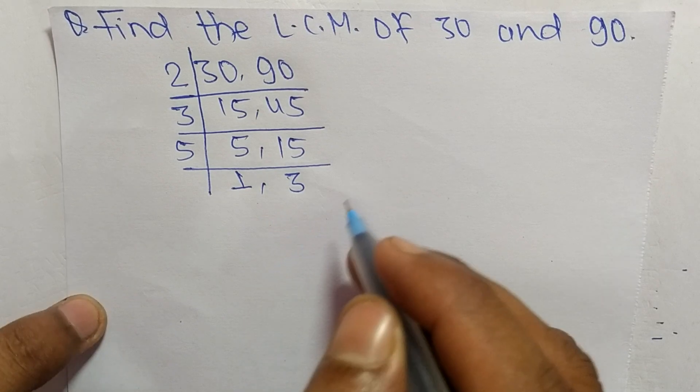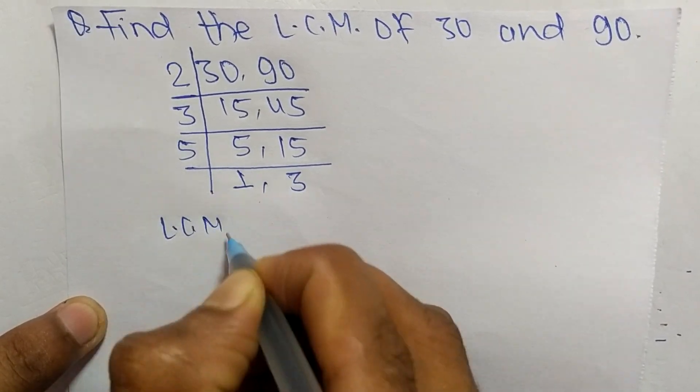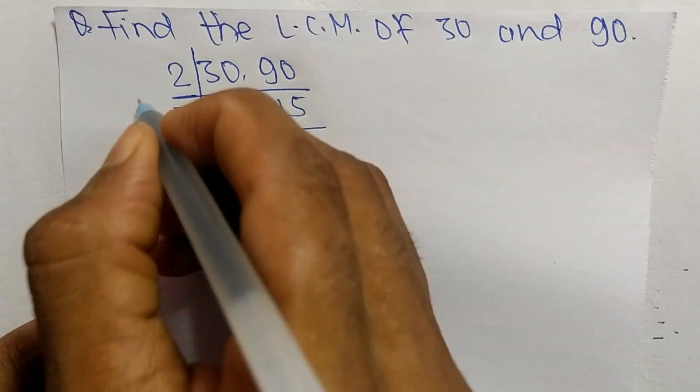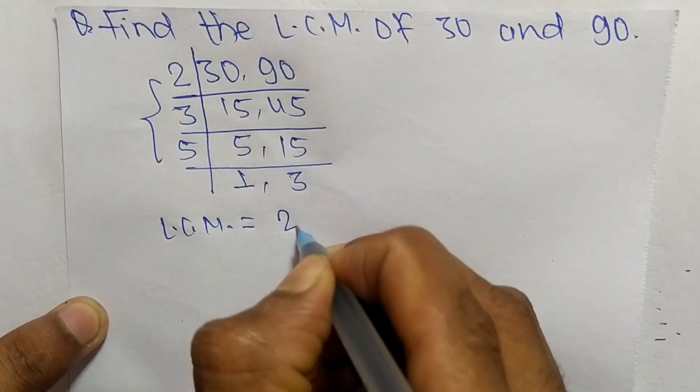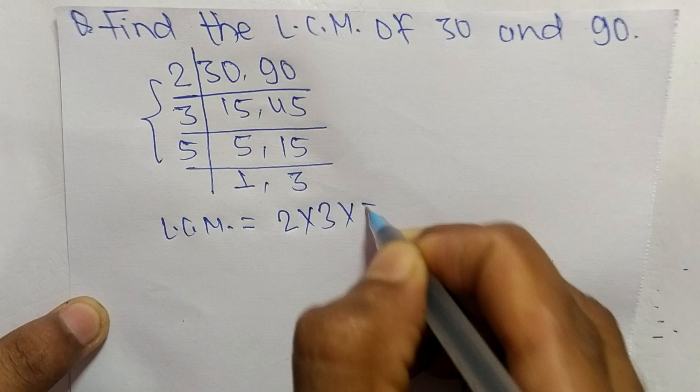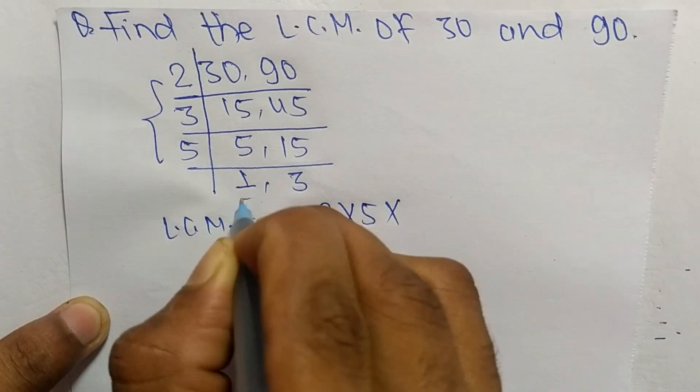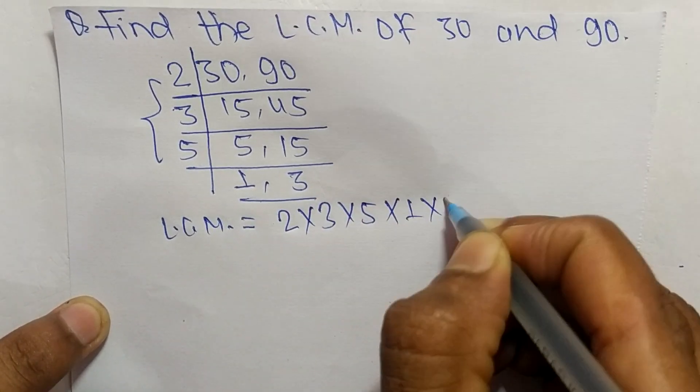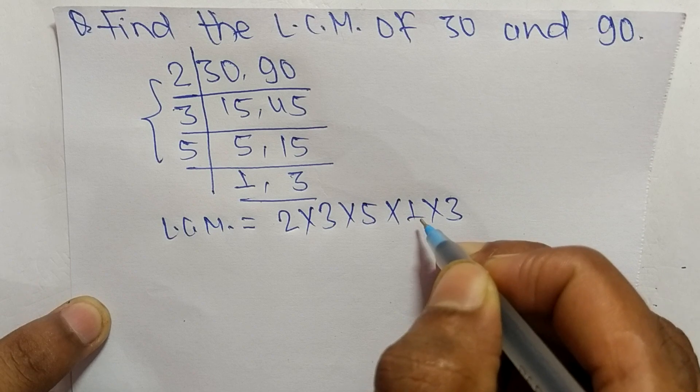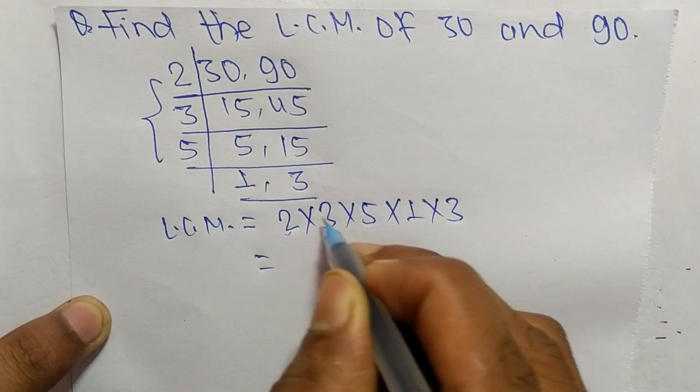So the LCM is equal to, from this part, 2 times 3 times 5, and from this part, 1 times 3. We can neglect 1 also, so it is 2 times 3 means 6.